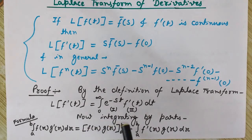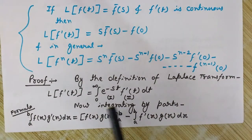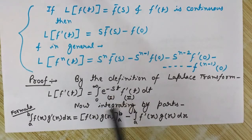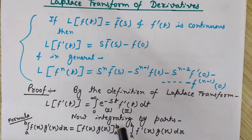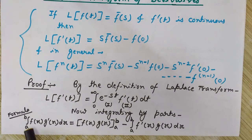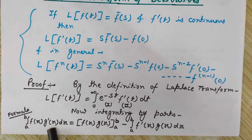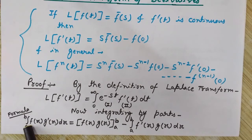Now we will do the integration by parts. In integration by parts, we first assign first and second functions. By the formula of integration by parts, for definite integration, if we have two functions f(x) and g'(x) — where g'(x) means the differentiation of g(x) — the integration of this from a to b would be: first function times integration of second function, with limits a to b.